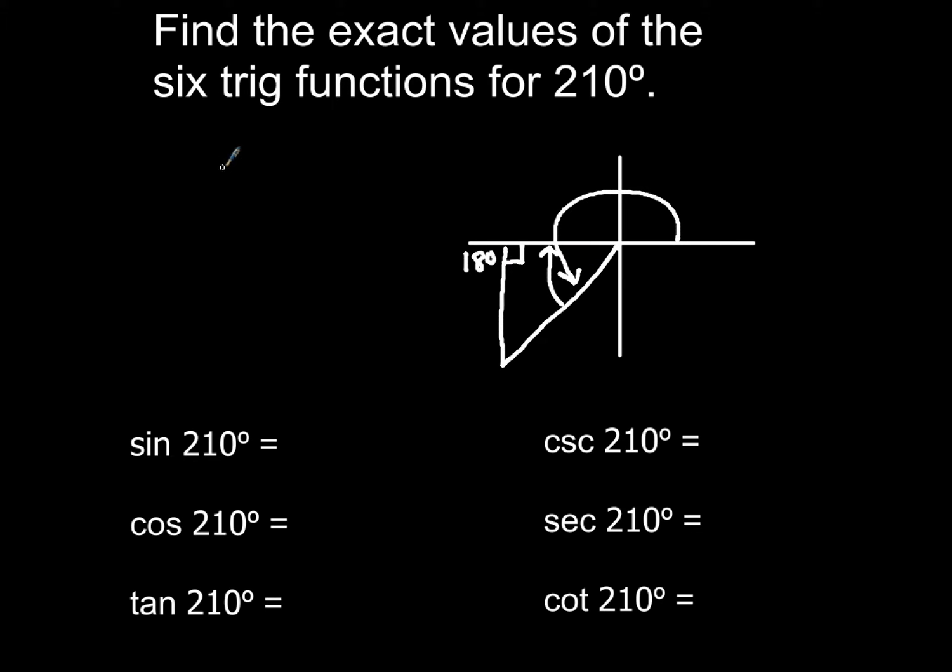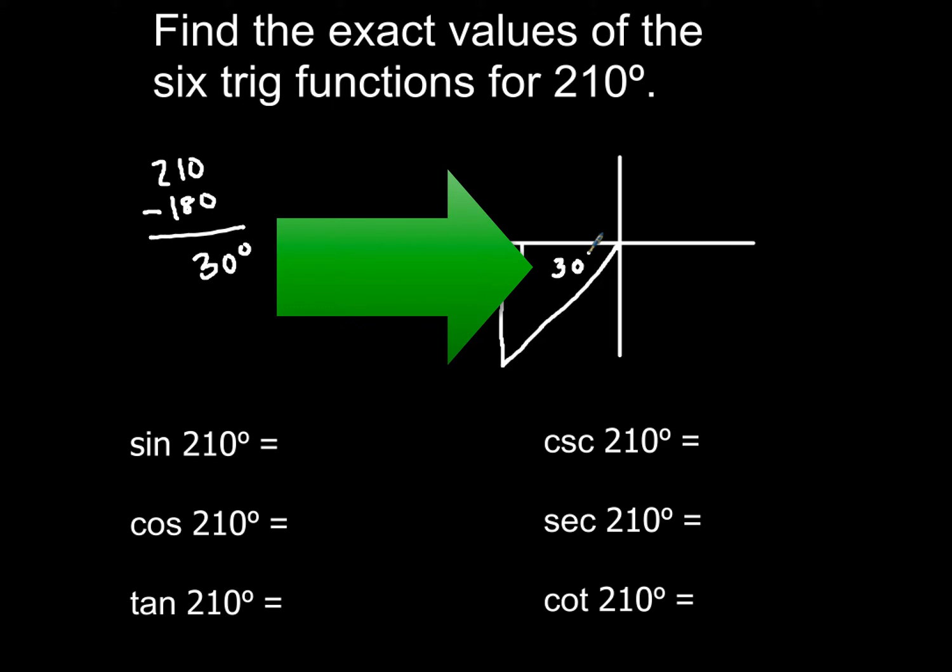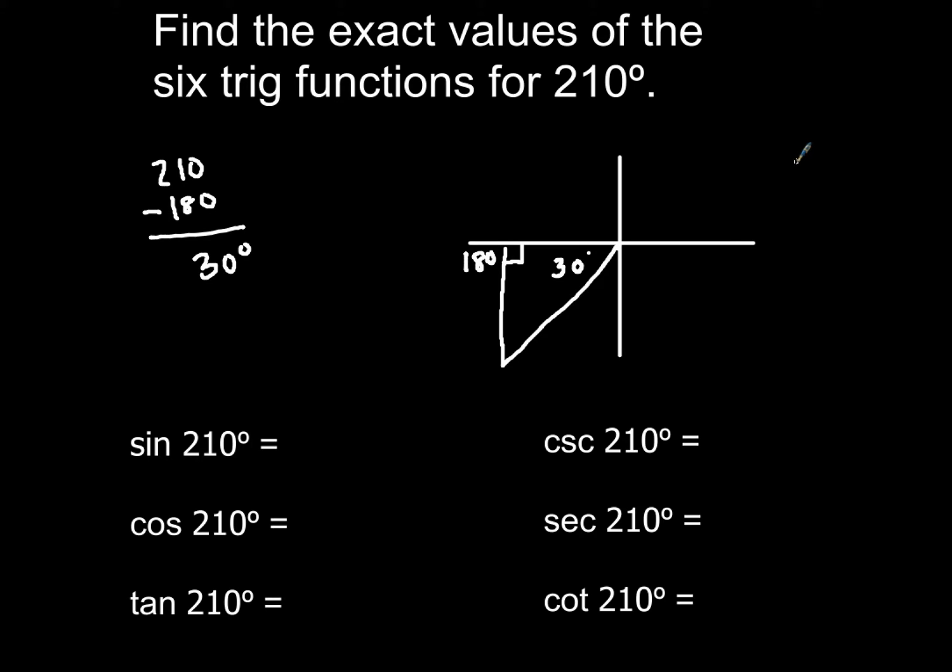So I'm just going to kind of draw a triangle right there. Now, 210 degrees is all the way around to this spot right here, but to go back up to the x-axis, I've got to move back 30 degrees. So how do I know that? Well, you have 210 minus 180, so my reference angle is going to be 30 degrees. Now what that tells me is what I'm going to do is put 30 degrees right here in this spot in my reference triangle.